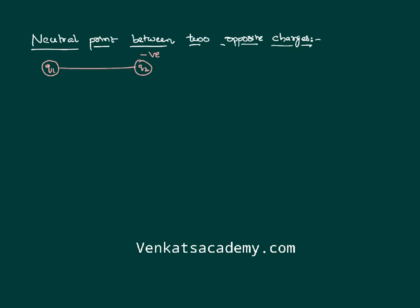Say, for example, if we try to find a neutral point between these two charges, we place a test charge q3 at some distance between them. q1 being a positive charge applies a repulsive force on q3. q2 being a negative charge applies an attractive force on q3. You might notice that these two forces are in the same direction — f1 is parallel to f2.